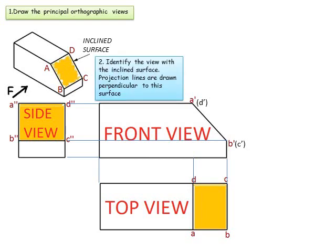Projection lines are drawn at 90 degrees from A' and B'. The next step is to identify which projection is to be projected onto the auxiliary plane — in this example, the top view. So a reference line is drawn on the top view; let's name it RL.